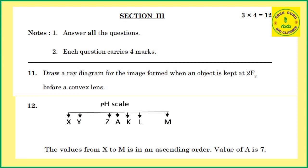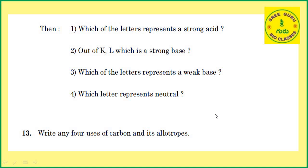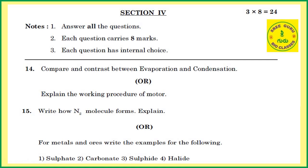In Section 3, answer all the questions. Each question carries four marks. For example, one question asks: draw a ray diagram for the image formed when an object is kept before a convex lens. So Section 3 has 4-mark questions.